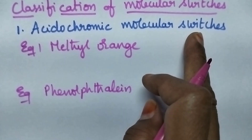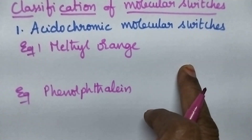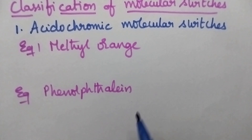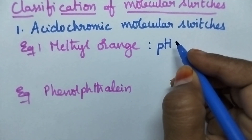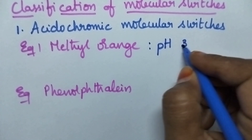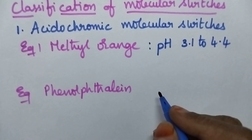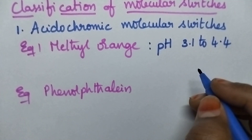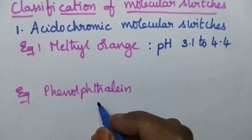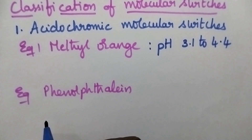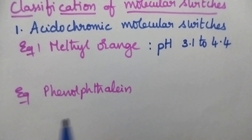Acidochromic molecular switches are the molecules which can change their structure depending upon the pH value. Especially when we consider methyl orange, it is capable of changing its structure at a pH range of 3.1 to 4.4, and it can modify its color from yellow to red from basic medium to acidic medium. Because of the structural modification, it exhibits different colors in acidic and basic medium.